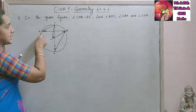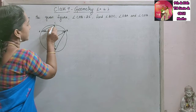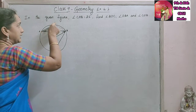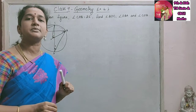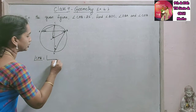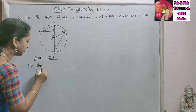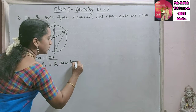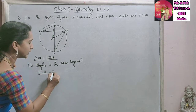If we take angle CAB, that is given as 25 degrees, and if we join CB, we will get that angle CAB and angle CDB are in the same segment. We know that angles in the same segment are of equal measure. So we got angle CDB as 25 degrees.